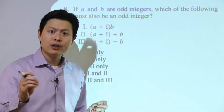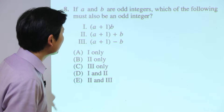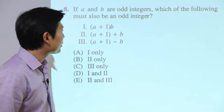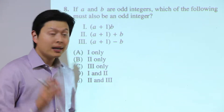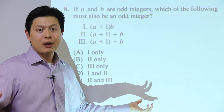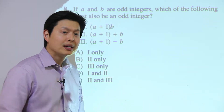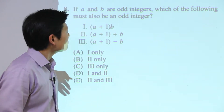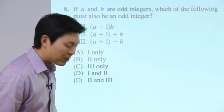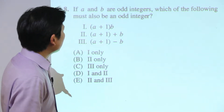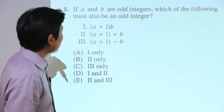One approach is to plug in numbers. For 99% of parity questions you can plug in numbers, so don't be afraid to do that. Just make sure you test enough numbers to be convinced it works all the time. For a could-be-true question, just find one number that works. But for must-be-true, you need to test enough to be fully convinced.